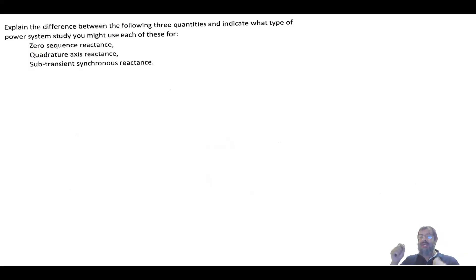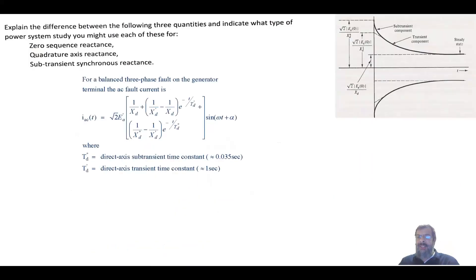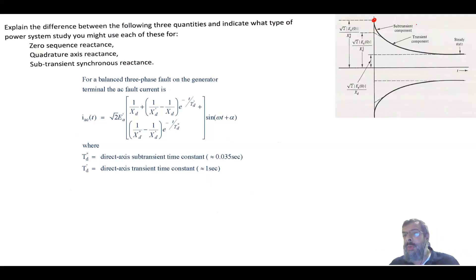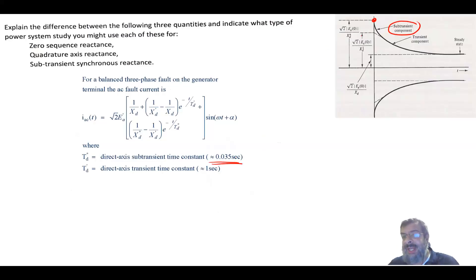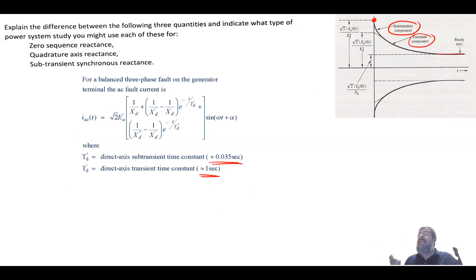The last quantity is the sub-transient synchronous reactance. When a generator is subjected to a fault — symmetrical or unsymmetrical — the fault current starts very high and gradually reduces. It begins with the sub-transient component, which lasts a very short period, around 35 to 50 milliseconds or a few cycles. After that, the current drops to the transient component, which lasts about one second, and then the current reaches steady state until the fault is cleared.